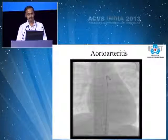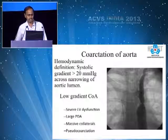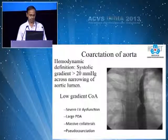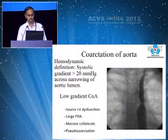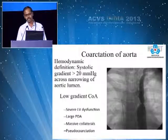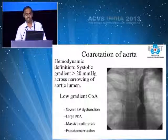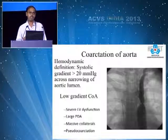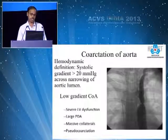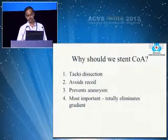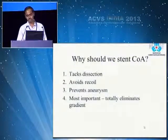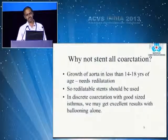Coarctation of the aorta is hemodynamically defined as a systolic gradient of more than 20 mmHg. However, low-gradient coarctations can be due to ventricular dysfunction, a large associated PDA, massive collaterals, or pseudo-coarctation. Why stent rather than simply balloon dilate? Balloon dilatation causes intimal tears; stenting tacks all dissections, avoids recoil, prevents aneurysm, and most importantly, totally eliminates the gradient — you leave the lab with near-zero gradients.